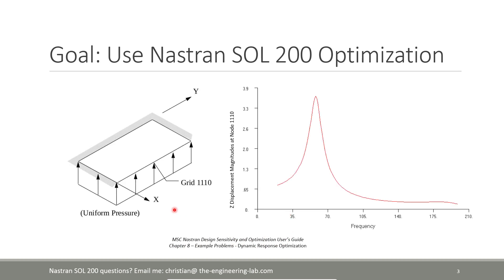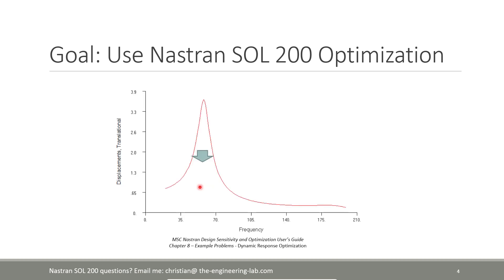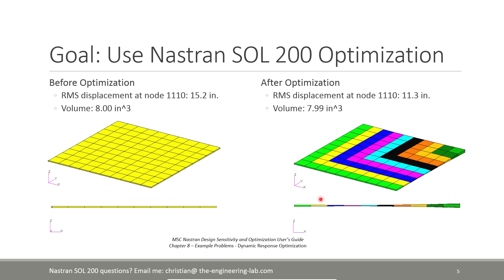You'll find this example in chapter 8, titled Dynamic Response Optimization. What's going on here is that we have a plate that's going to be subjected to a frequency-dependent load. We want to monitor the response — specifically the displacement response for grid 1110. By the end of this video, we want to minimize the response at that node for the given set of forcing frequencies.